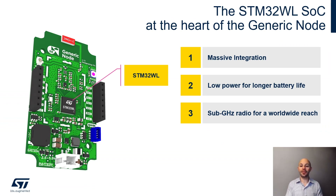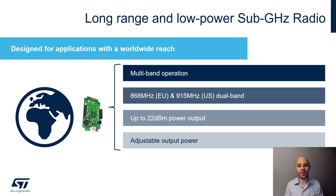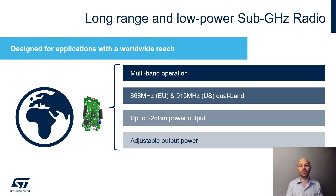We have seen the long battery life benefits. Let's switch to the next topic: the sub-GHz radio and its worldwide capability. The generic node supports multi-band operation, in line with European and US frequency regulations. It can reach up to 22 dBm output power with adjustable output — all achieved thanks to the STM32WL.